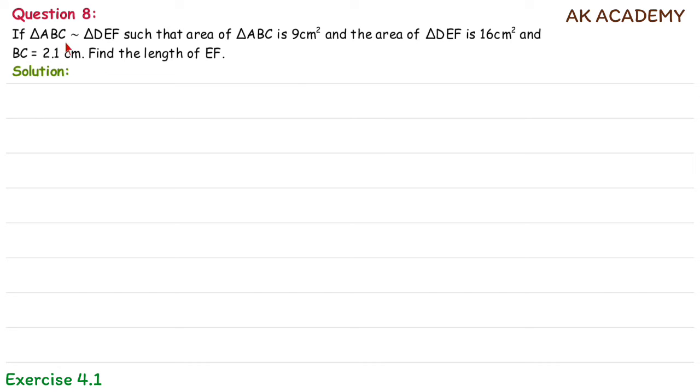If triangle ABC is similar to triangle DEF such that the area of ABC is 9 cm² and the area of triangle DEF is 16 cm², and BC equals 2.1 cm, find the length of EF.